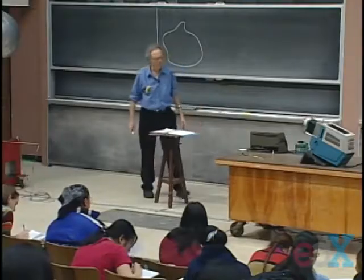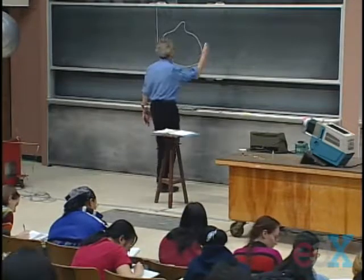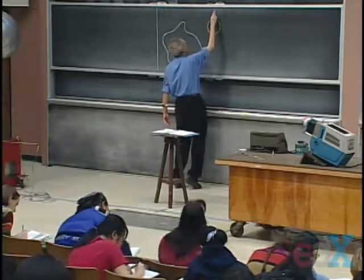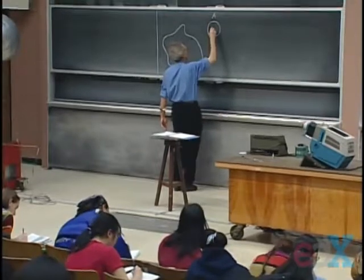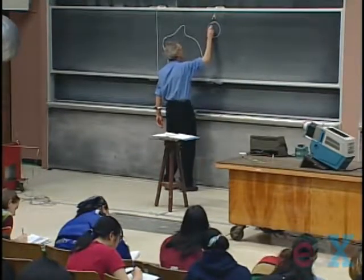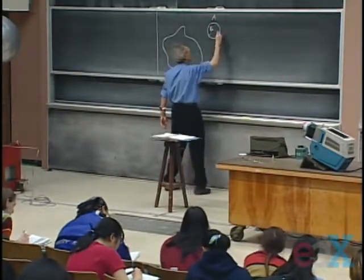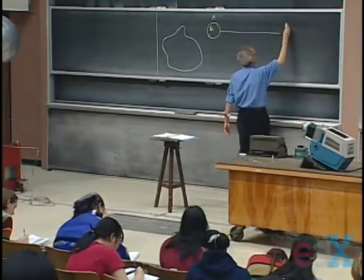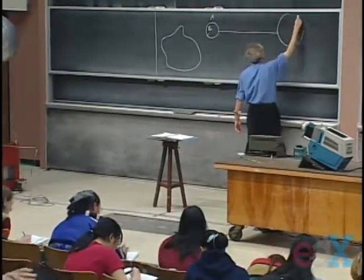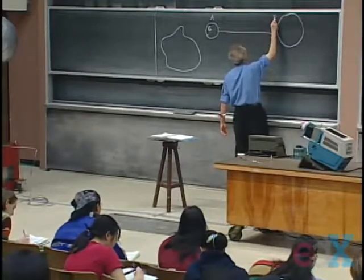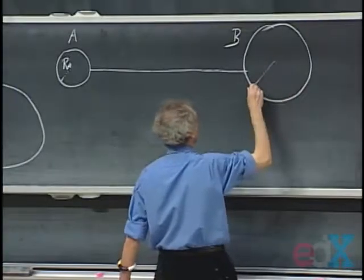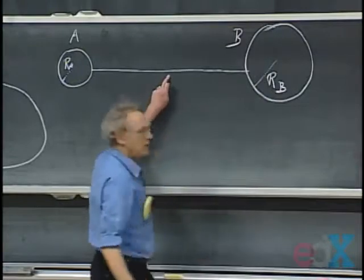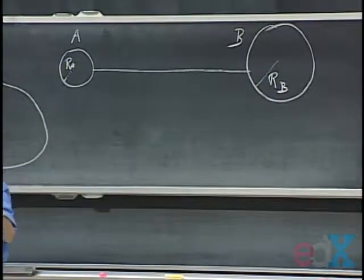The way I want to approach that is as follows. Suppose I have a solid conductor A with radius R_A, and very far away — maybe tens of meters away — I have a solid conductor B with radius R_B, and they are connected through a conducting wire. That's essential.